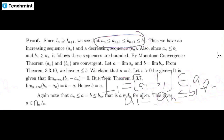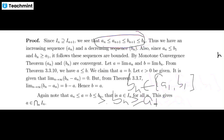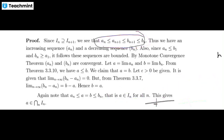By the Monotone Convergence Theorem, {aₙ} is convergent. Similarly, every bₙ lies in [a₁, b₁], so bₙ ≥ a₁. Since {bₙ} is decreasing, b₁ is the largest, making {bₙ} bounded and decreasing. By another application of the Monotone Convergence Theorem, {bₙ} is also convergent. Let a = lim aₙ and b = lim bₙ.